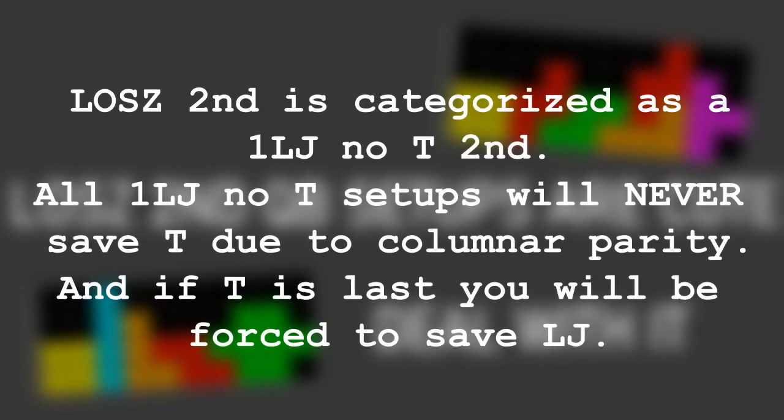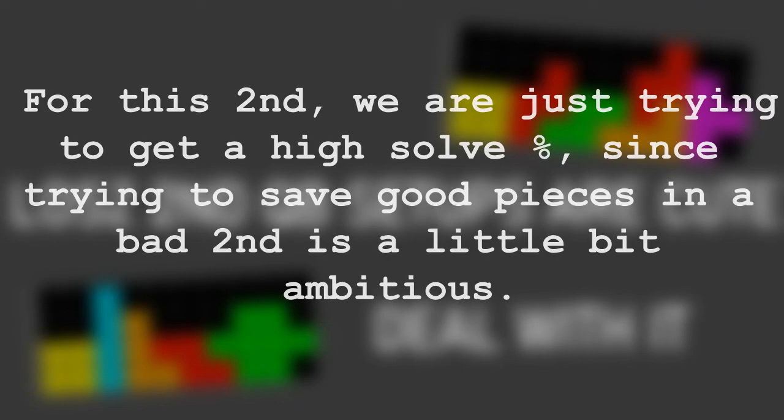LOSZ second is categorized as a 1LJ no T second. All 1LJ no T seconds will never save T due to columnar parity, and if T is last, you will be forced to save LJ. For this second, we are just trying to get a high solve percentage since trying to save good pieces in a bad second is a little bit ambitious.